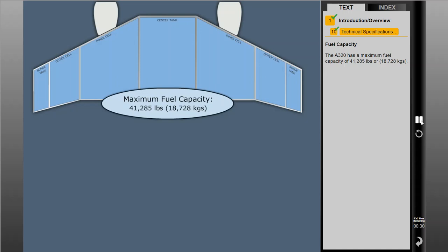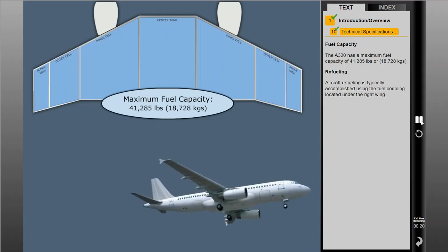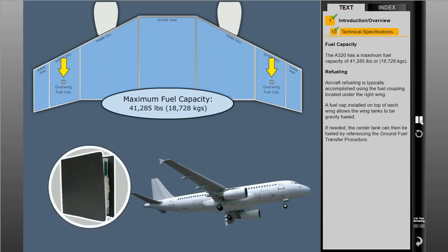The A320 has a maximum fuel capacity of 41,285 pounds, or 18,728 kilograms. Aircraft refueling is typically accomplished using the fuel coupling located under the right wing. A fuel cap installed on top of each wing allows the wing tanks to be gravity fueled. If needed, the center tank can then be fueled by referencing the ground fuel transfer procedure.